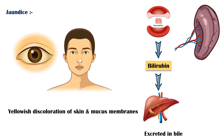However, in liver disease, the liver is unable to conjugate bilirubin, which leads to its accumulation in blood. Excess bilirubin can deposit in various tissues in the body, including the skin, eyes, and other mucous membranes.